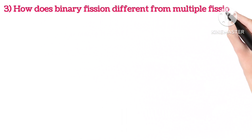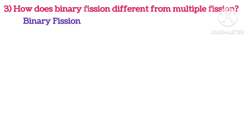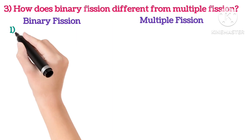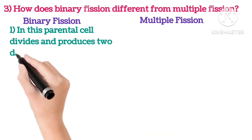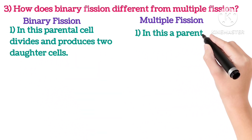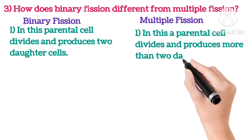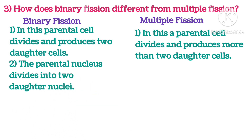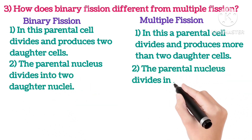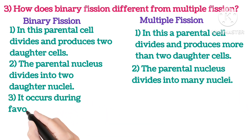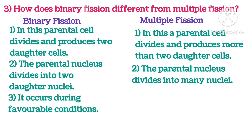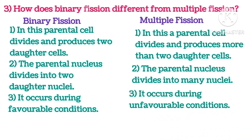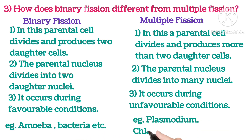Third: How does binary fission differ from multiple fission? In binary fission, the parental cell divides and produces two daughter cells; in multiple fission, the parent cell produces more than two daughter cells. In binary fission, the parental nucleus divides into two daughter nuclei; in multiple fission, it divides into many nuclei. Binary fission occurs during favourable conditions; multiple fission occurs during unfavourable conditions. Examples of binary fission: bacteria and amoeba; multiple fission: plasmodium and chlamydomonas.